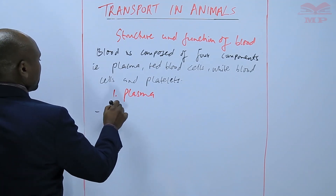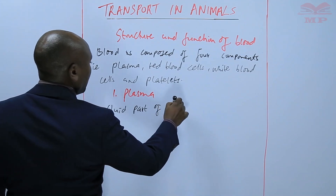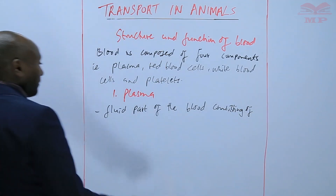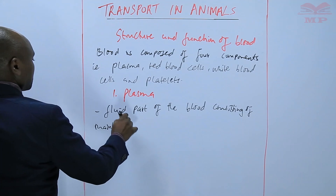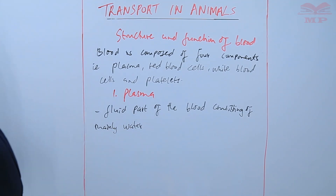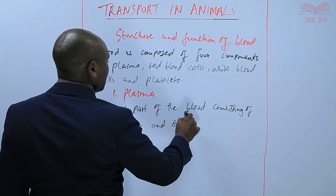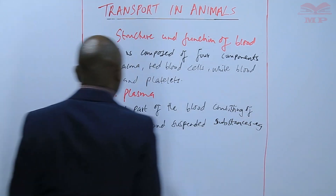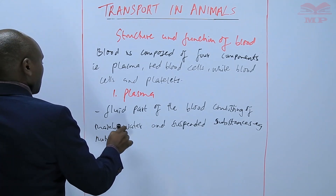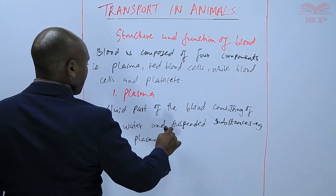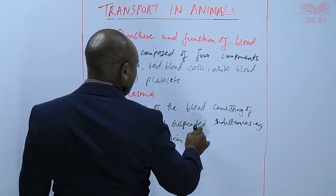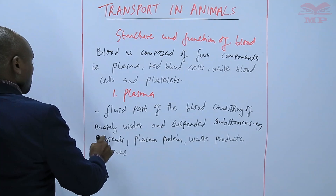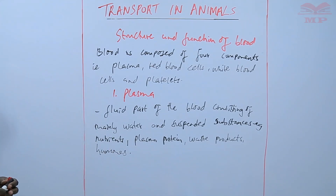Plasma is the fluid part of the blood, consisting mainly of water — 90% of the plasma is water — and suspended substances, e.g. nutrients, plasma proteins, waste products, hormones, and so on. So basically, all those constitute the plasma.